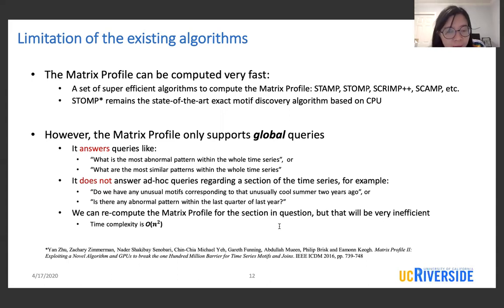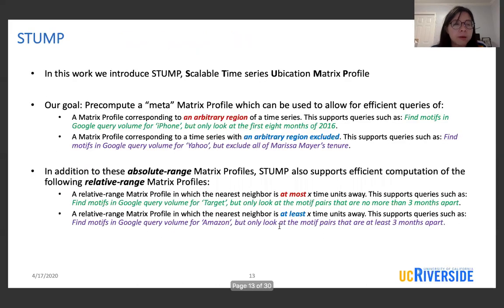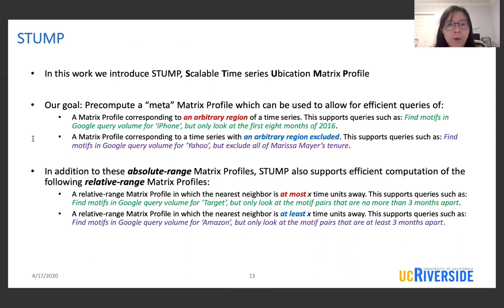The time complexity of recomputation is O(n squared), where n is the length of the section. We may want to issue such ad hoc queries a lot while we explore the time series data. So to improve ad hoc arbitrary range queries, in this work we introduce STMP, Scalable Time Series Matrix Profile.